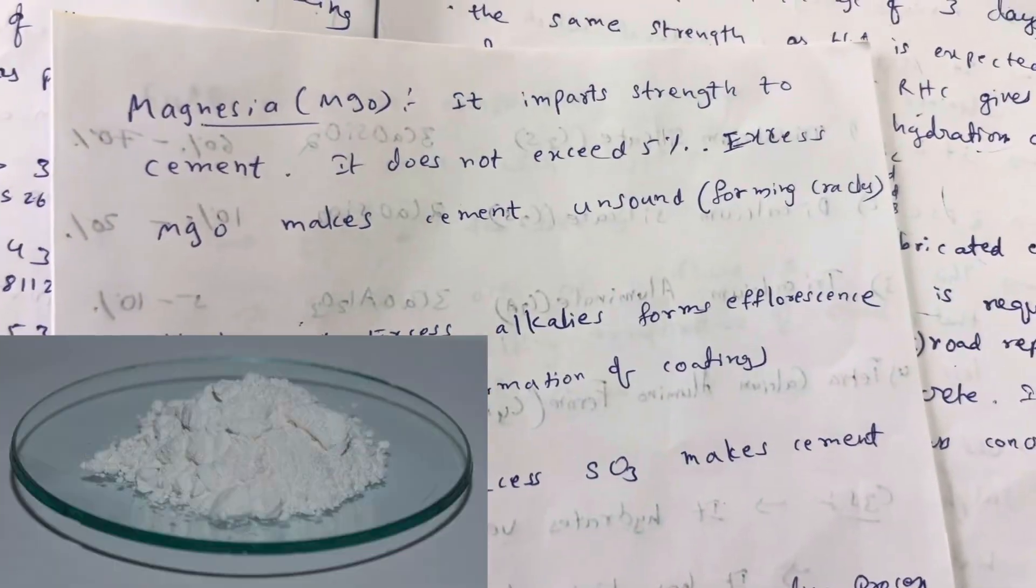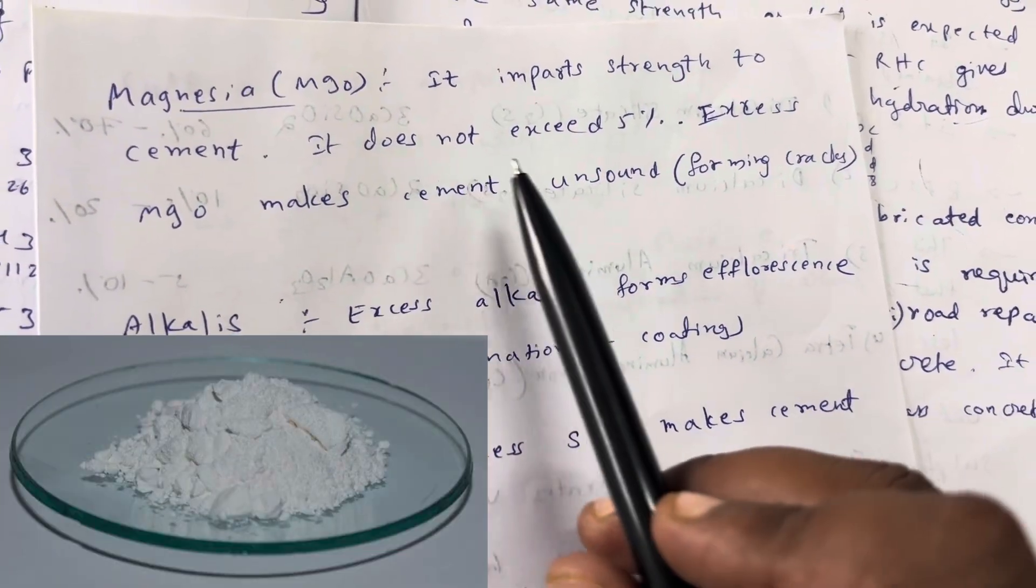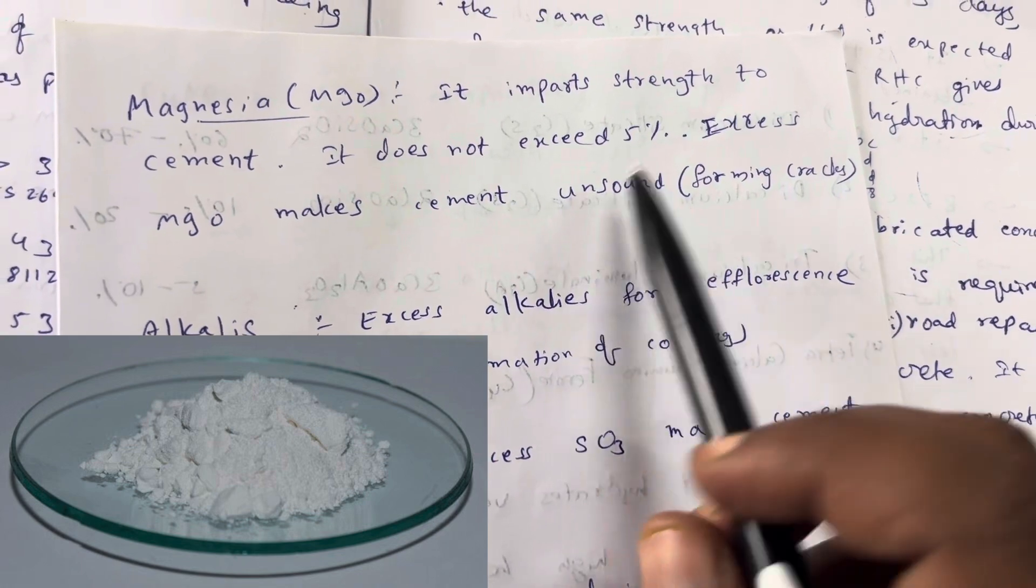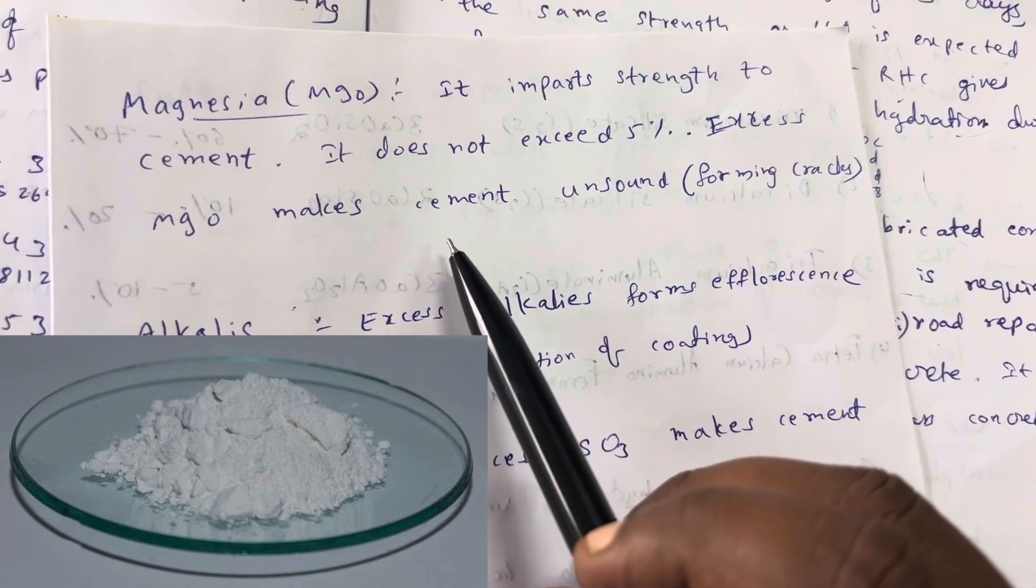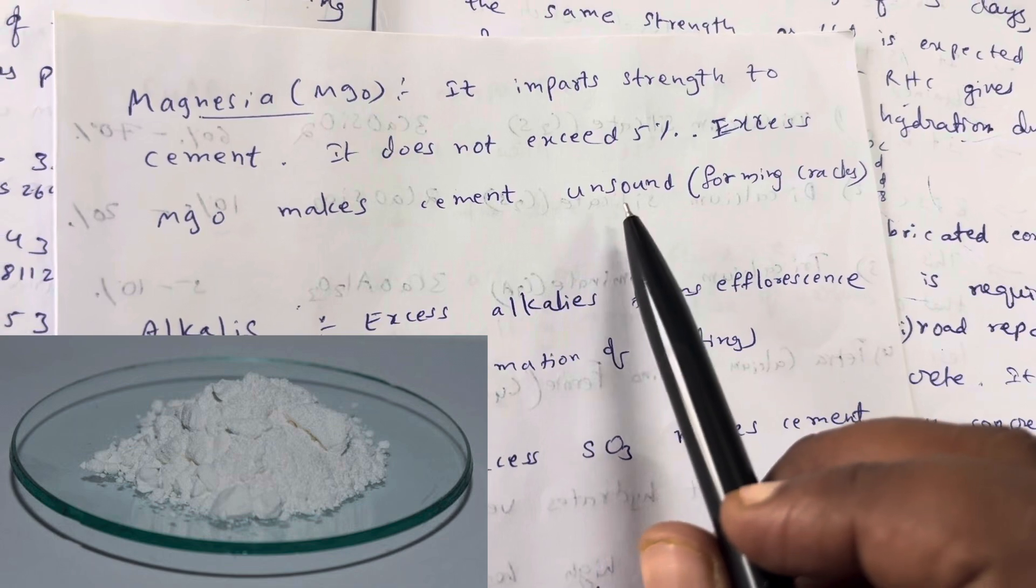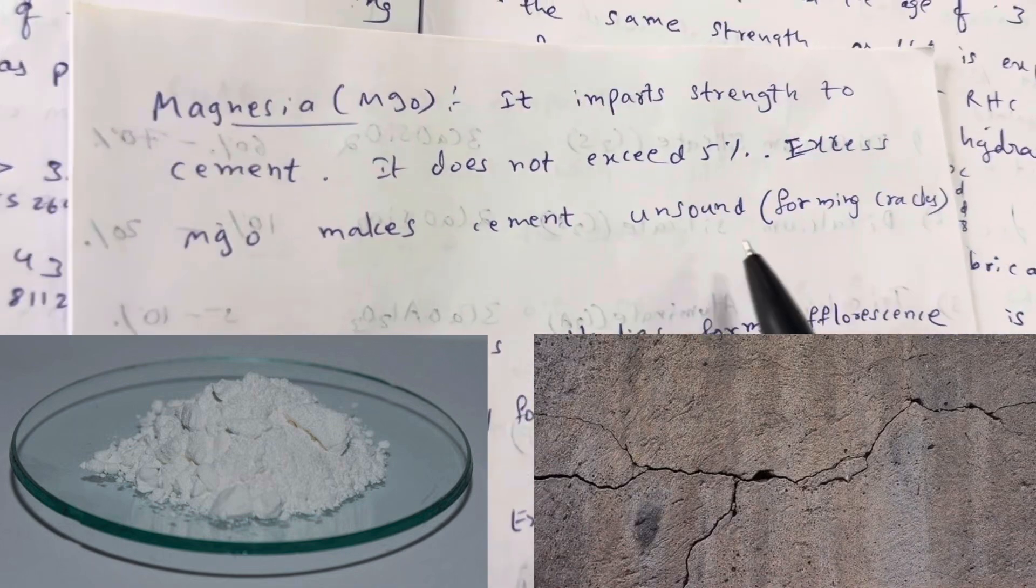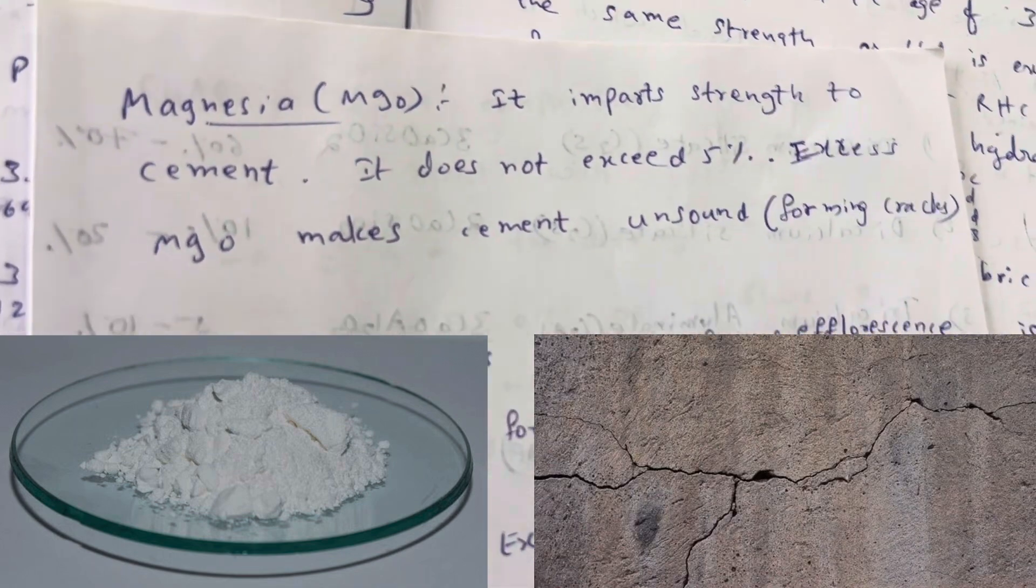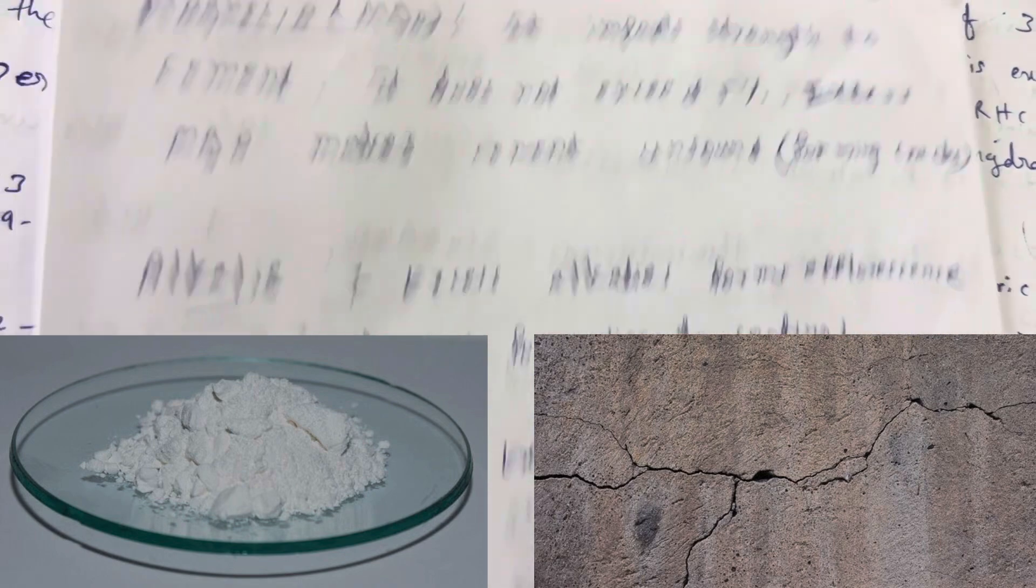Next, magnesium oxide MgO. It imparts strength to cement. It does not exceed 4-5%. Excess MgO makes cement unsound, meaning it forms cracks. If MgO content is more than 5%, cracks will be formed.